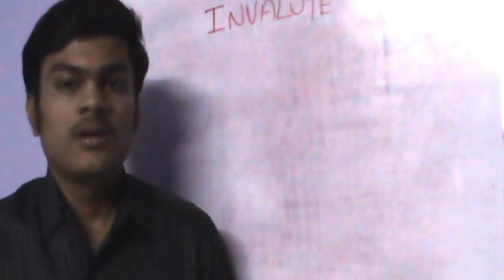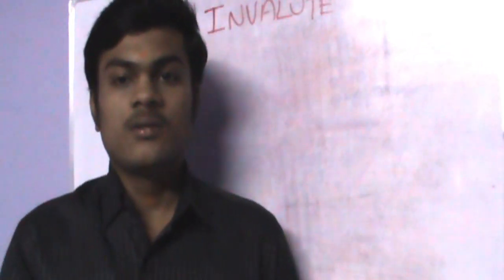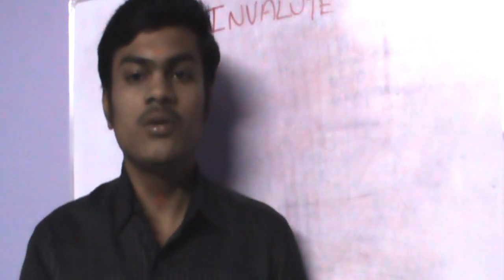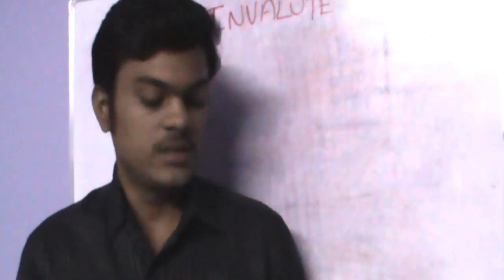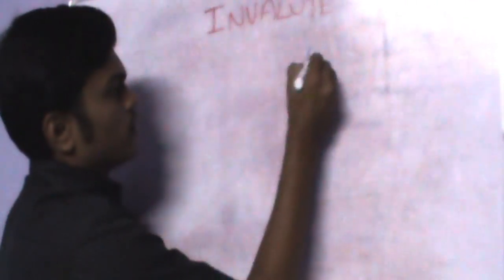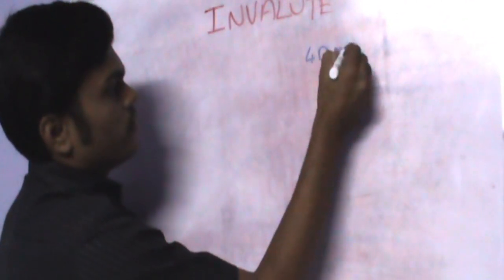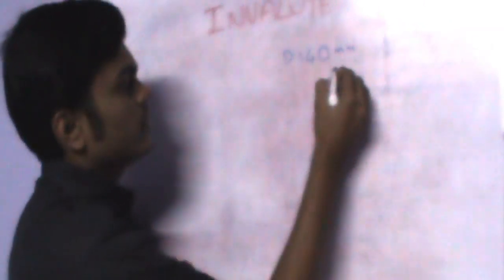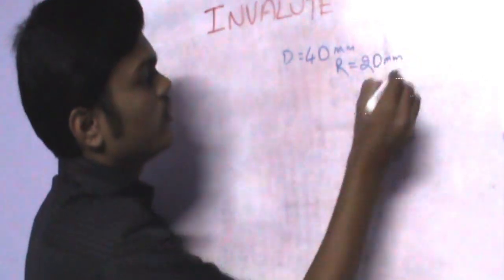Let me take an example problem. Draw an Involute of a circle of diameter 40 mm. The diameter of the circle is given as 40 mm. We need to find the radius of the circle. The radius is 40 divided by 2, which is 20 mm.